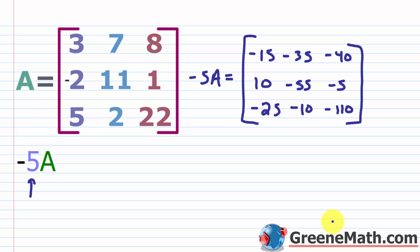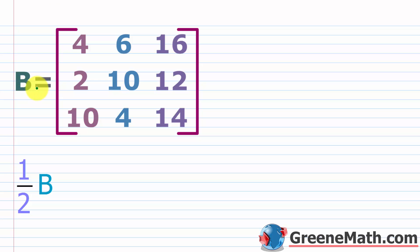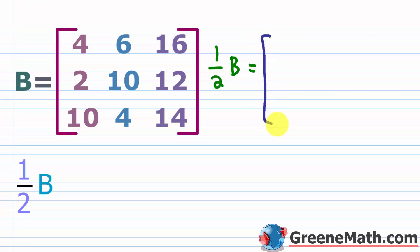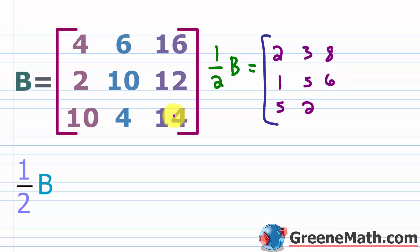Let's look at another example. For matrix B, the first row is four, six, and sixteen; the second row is two, ten, and twelve; and the third row is ten, four, and fourteen — another three by three square matrix. If we want to find one half times B, we multiply every element by one half: one half times four is two, one half times six is three, one half times sixteen is eight, one half times two is one, one half times ten is five, one half times twelve is six, one half times ten is five, one half times four is two, and one half times fourteen is seven.